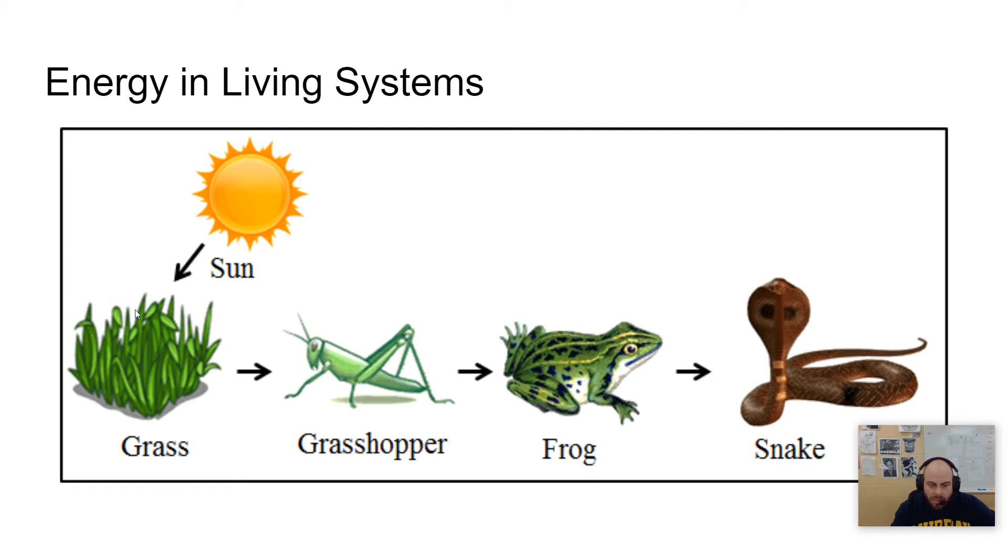Now what happens as this energy is transferred is, and we'll talk more about this in subsequent units, is that there's just a little bit of energy that's lost as you go from one level to the next. And so there's not as much energy available for the snake as there is for the frog, as there is for the grasshopper, as there is for the grass.